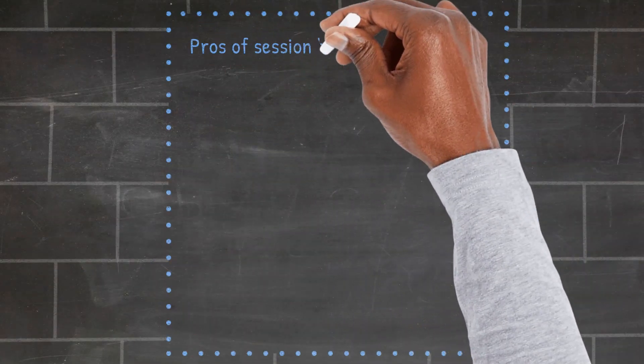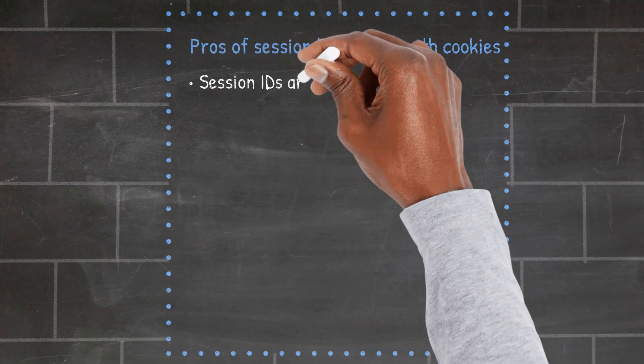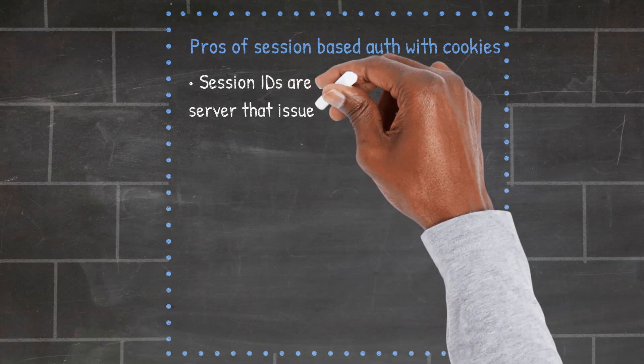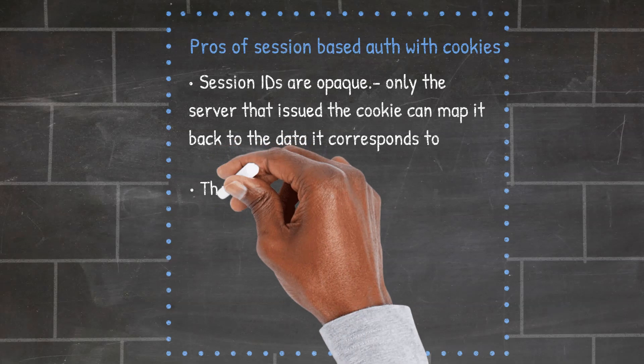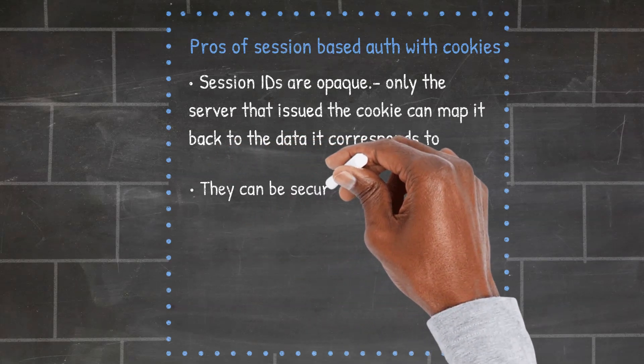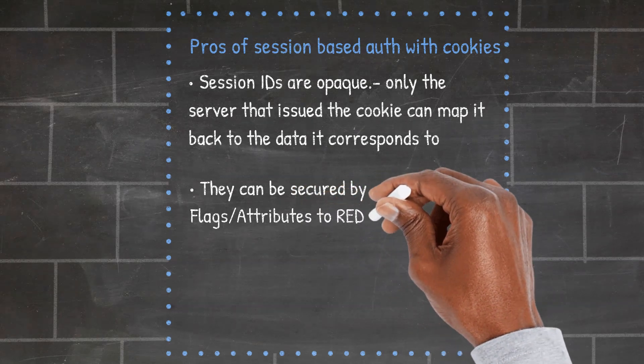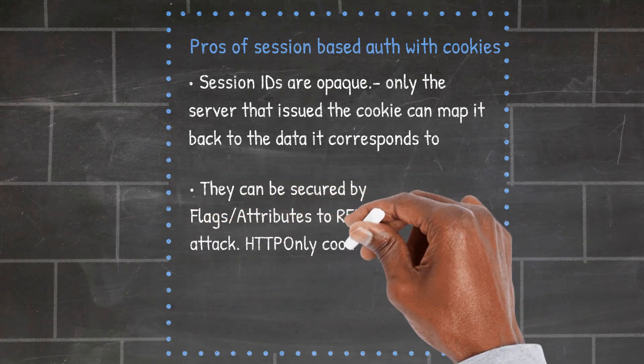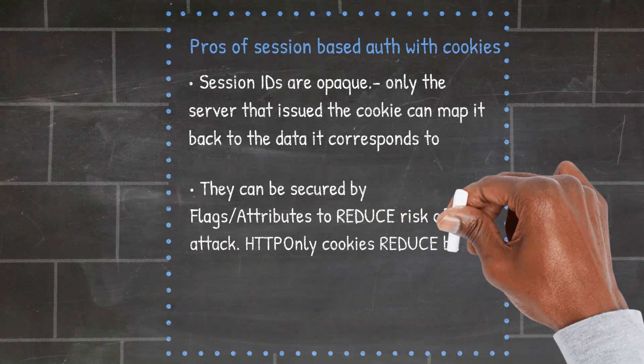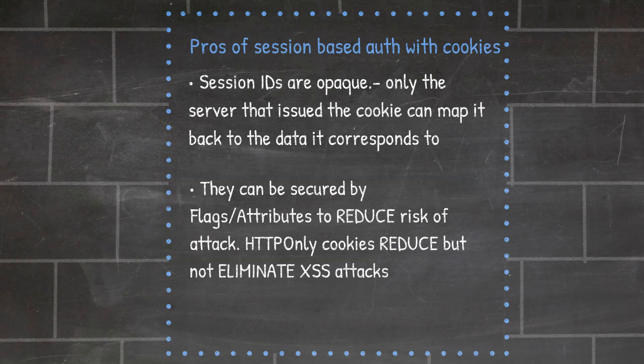Pros and cons of session-based authentication with cookies. The pros: Session IDs are opaque, meaning that it's only the issuer or the server that can map it back to the data it corresponds to. Cookies can be secured with flags such as HTTP only, secure, and the same-site flag to reduce the risk of attack. That being said, remember that HTTP only cookies reduce, not eliminate, the risks of cross-site scripting attacks.